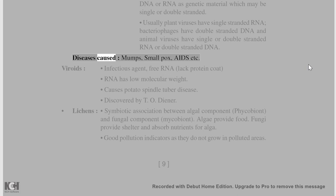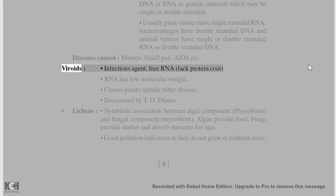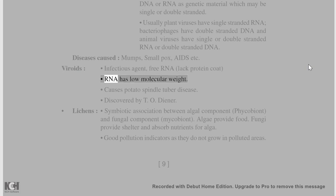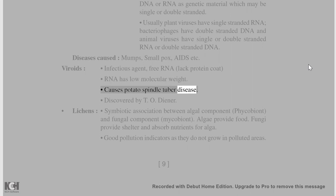Diseases caused by viruses include mumps, smallpox, and AIDS. Viroids are infectious agents consisting of free RNA, lack a protein coat, and have RNA of low molecular weight. They cause potato spindle tuber disease and were discovered by T.O. Diener.